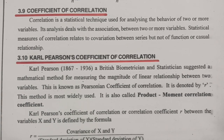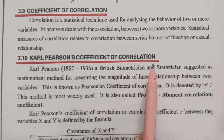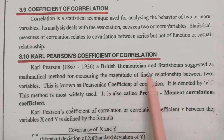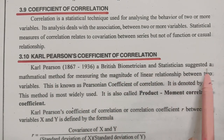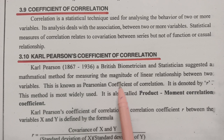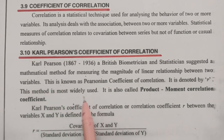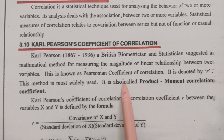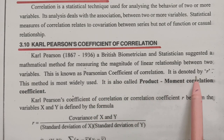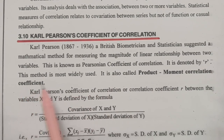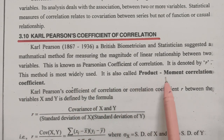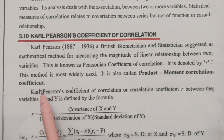The first and most important mathematical method is Karl Pearson's coefficient of correlation. Karl Pearson, a British biometrician and statistician, suggested a mathematical method for measuring the magnitude of a linear relationship between two variables. This is known as the Pearsonian coefficient of correlation, denoted by gamma (r). This method is most widely used and is also called the product moment correlation coefficient.